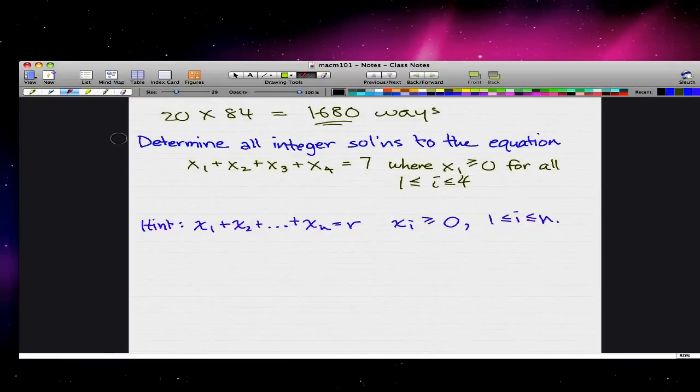So the question is, determine all integer solutions to the equation x1 plus x2 plus x3 plus x4 equals 7, where xi is greater than or equal to 0 for all 1 less than or equal to i less than or equal to 4, so for all these variables.